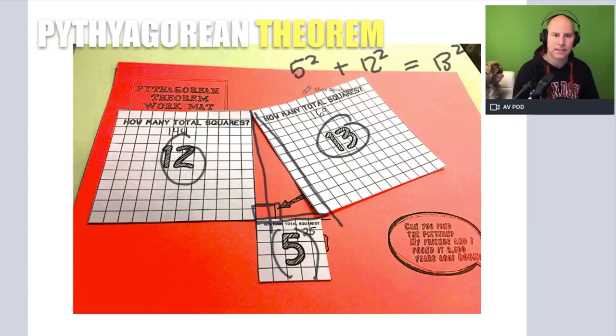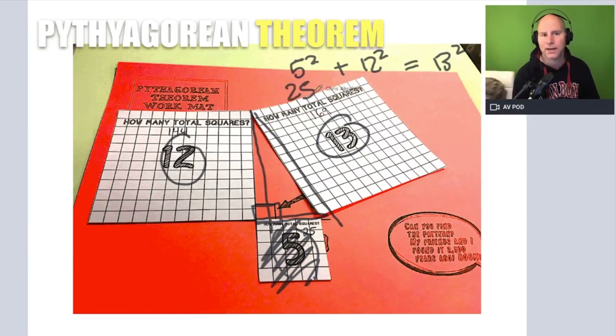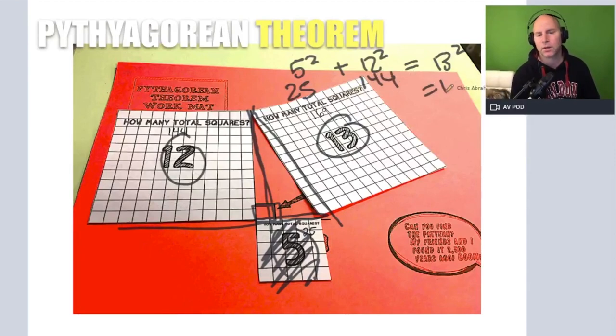Let's just make sure that makes sense. 5 times 5 or the area of this small triangle here, small square here is 25. 12 by 12 gets an area of 144. That's equal to 13 squared.